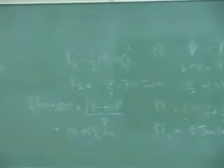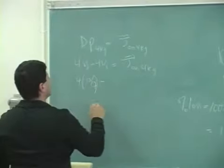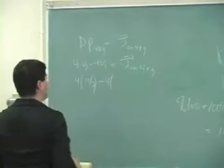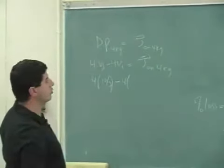So here, this is 4 times 10 sevenths minus 4 times V initial is going to be 1.